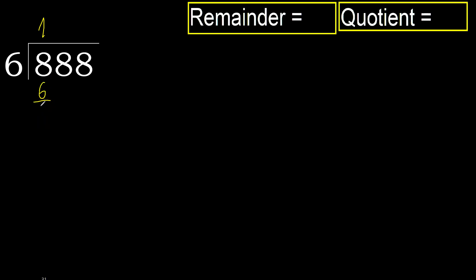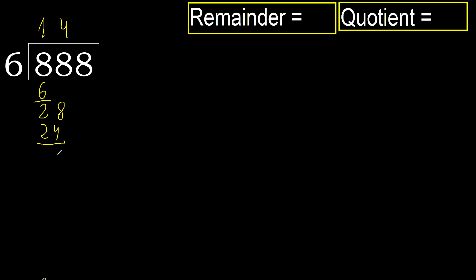Subtract. Next: 28. 6 multiplied by 5 is 30, which is greater. Multiply by 4: 24 is not greater. Subtract.